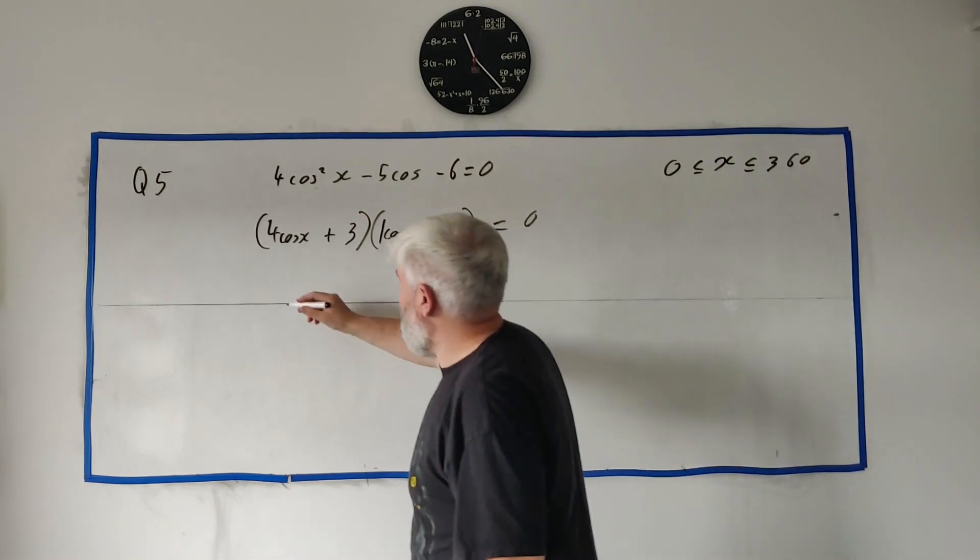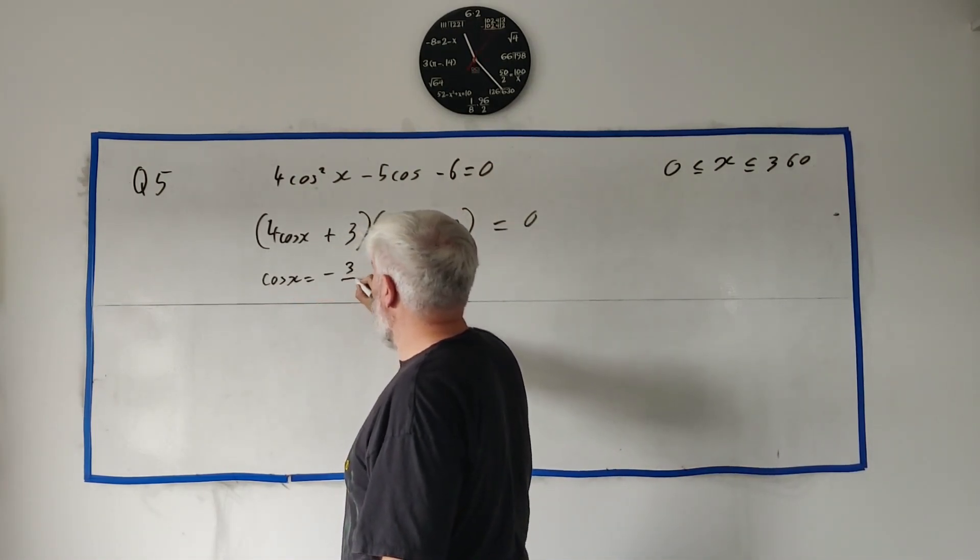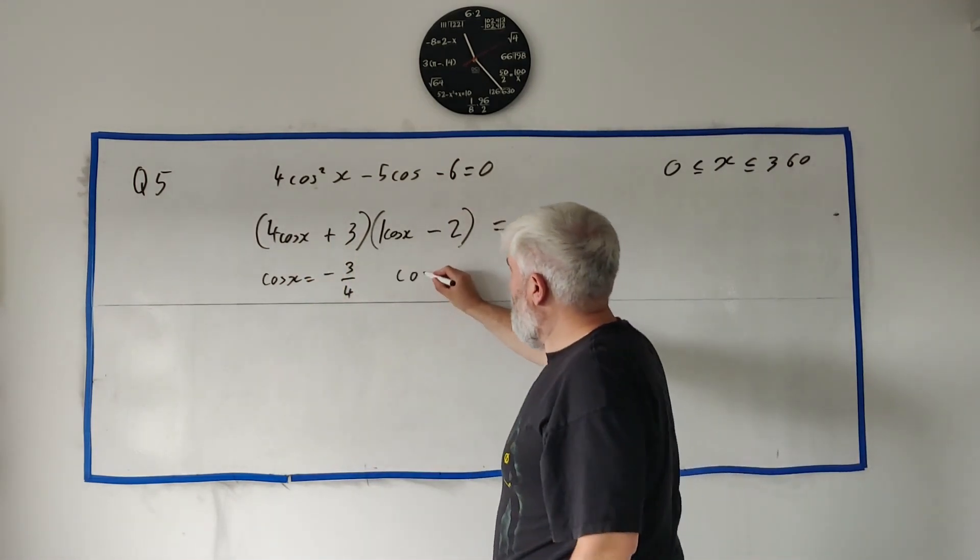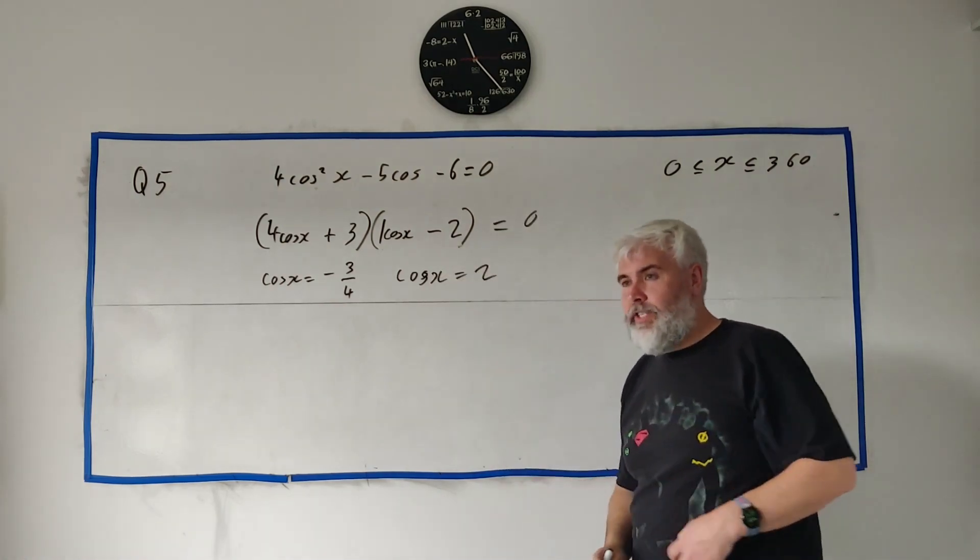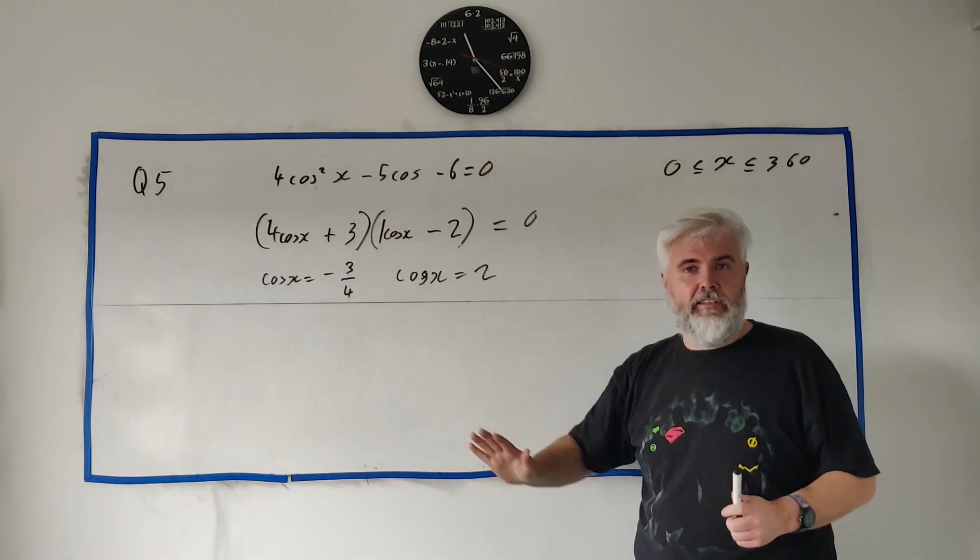And then we can put them equal to zero. We can get cosine x is equal to minus three over four. Simply rearranging a bit here. And cosine x equals two over three.